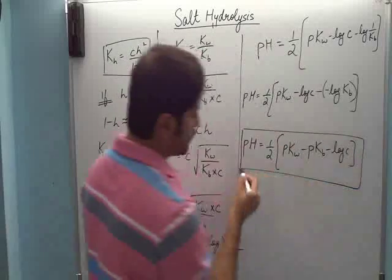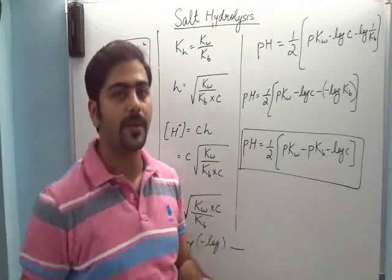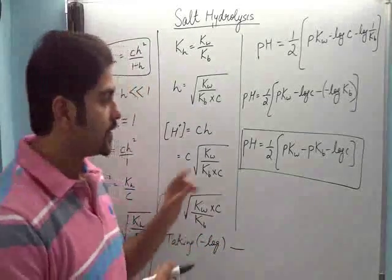To pH is equal to half of pKw, yeh minus pKb, aur yeh minus log C. To yeh final formula aagya. Agar aapko salt of strong acid and weak base ka salt hydrolysis ka formula nikalna hai, to yeh formula aapko use karna hai.